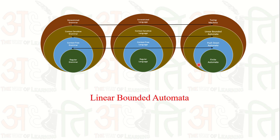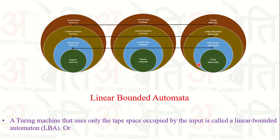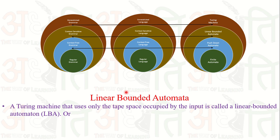Today we are going to discuss the linear bounded automata. What is it? What is its definition? A Turing machine that uses only the tape space occupied by the input is called the linear bounded automata. The name itself contains the word 'bounded.' Inside the Turing machine, the tape is not bounded — the left side is infinite and the right side is also infinite. Here, we are bounding it in a linear manner.